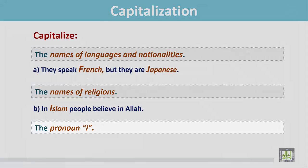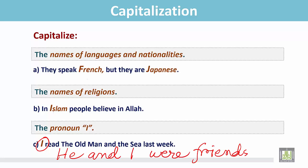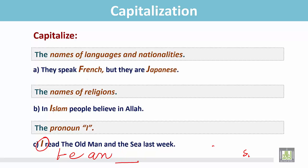The pronoun I should always be capital. I read The Old Man and the Sea last week. The pronoun I here is capital, and it is also the first word of the sentence. We can also say: He and I were friends. Here I is the pronoun and it is capital. Wherever it appears in the sentence — beginning, middle, or end — the pronoun I should always be capital.